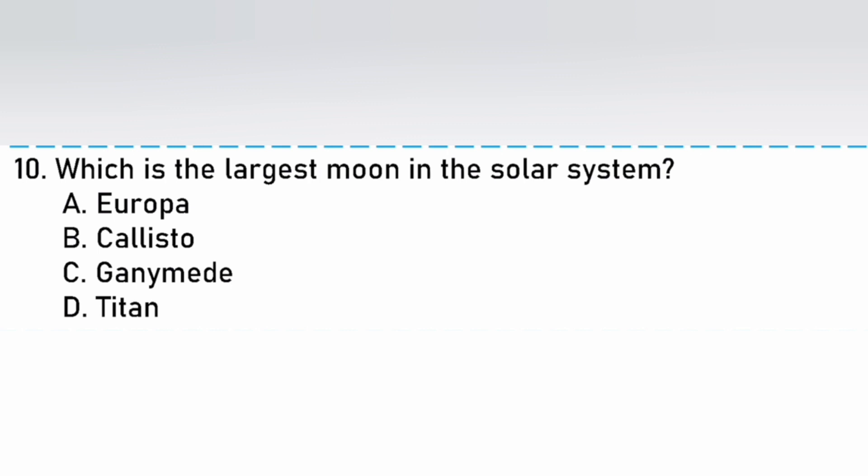Which is the largest moon in the solar system? Europa, Kastro, Ganymede, Titan. The answer is C. Ganymede.